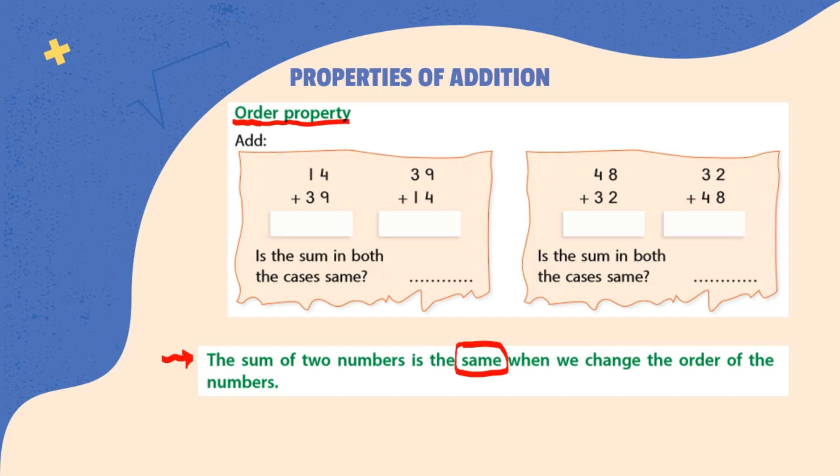Suppose, if we have 2 numbers 14 and 39. Either we add 14 to 39 or we add 39 to 14, the result will be same. Let us solve. Adding 14 to 39 will give 53 and adding 39 to 14 result is 53. So, sum in both case is same. Similarly, adding 48 to 32 and 32 to 48 the result is 80 in both cases. So, the sum of 2 numbers is the same when we change the order of numbers.